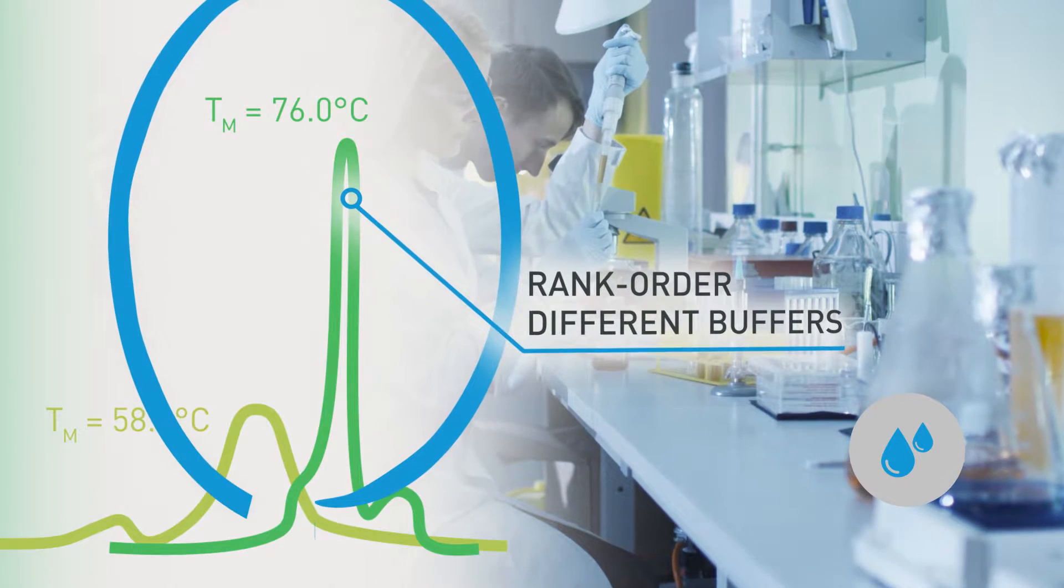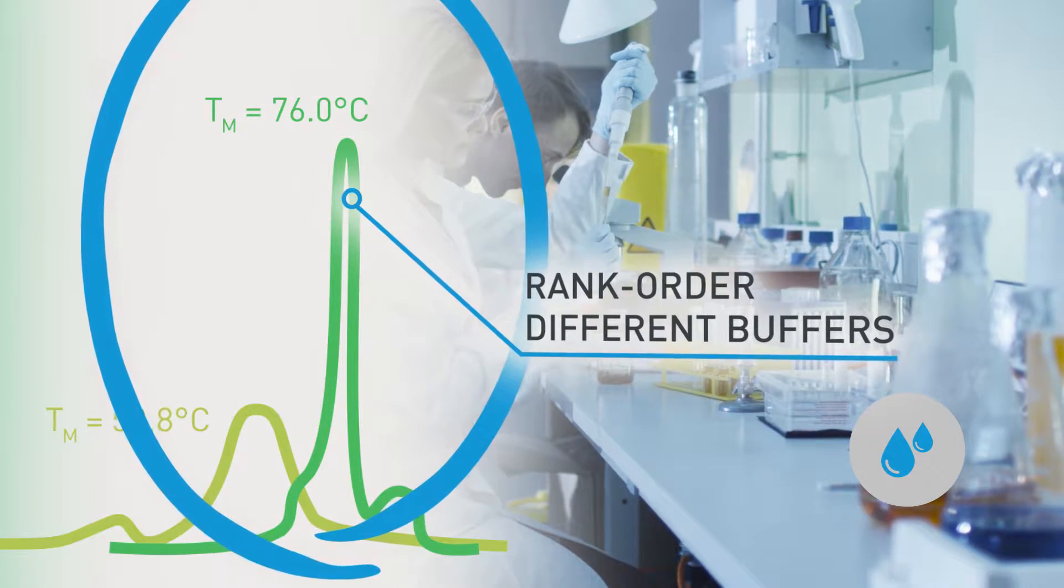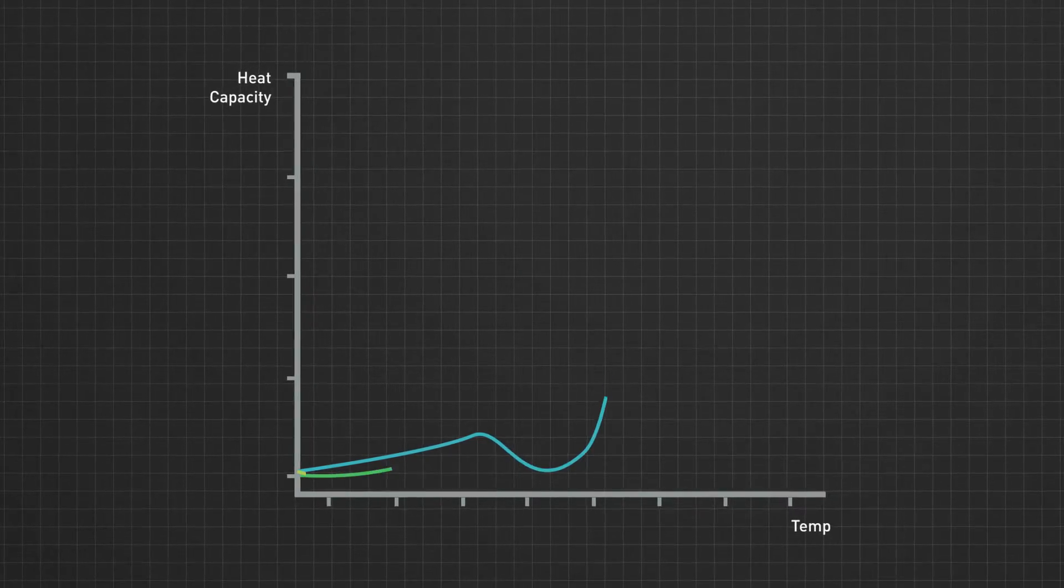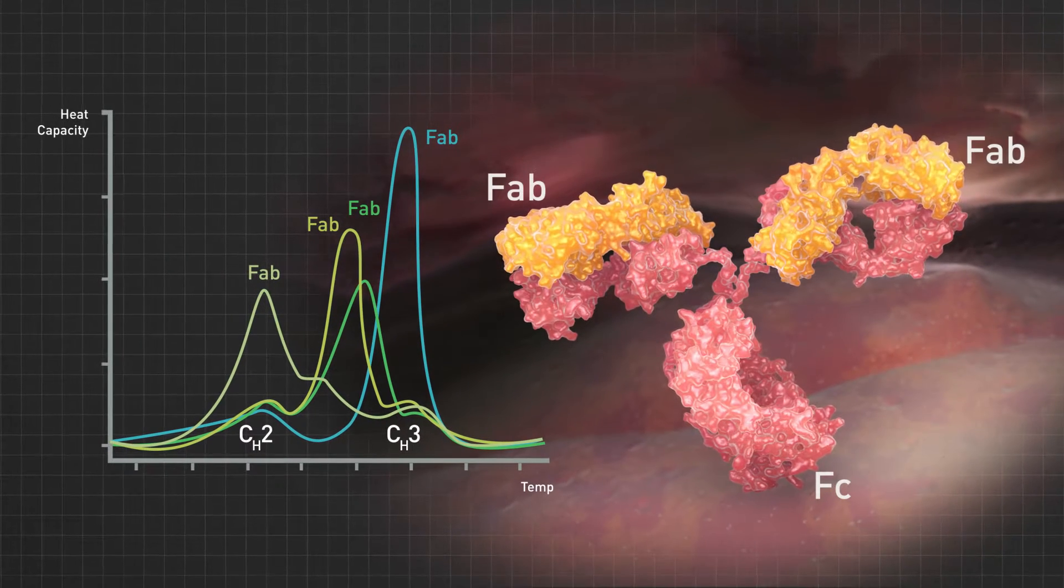DSC is commonly used to evaluate the multiple Tms of large multi-domain proteins like antibodies.